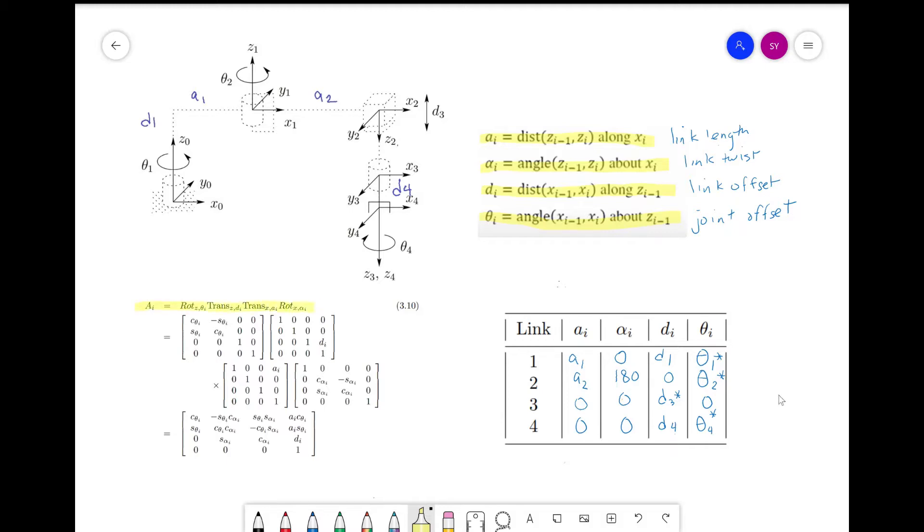A_i is a rotation around z of theta_i, and a translation along z of d_i, followed by a translation along x of a_i, and a rotation around x of alpha_i. We form A_i by simply substituting the DH parameters into the equation.